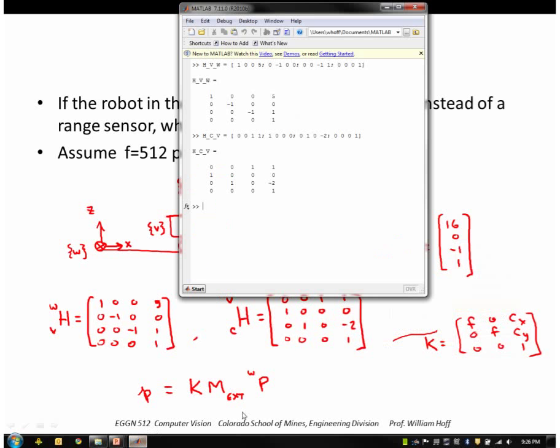Okay, so K is going to be 512, 0, 256, 0, 512, 256, 0, 0, 1.